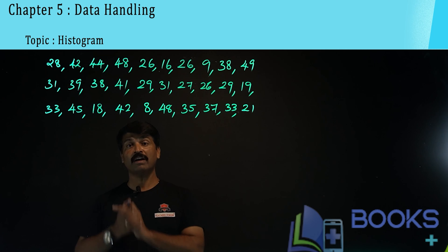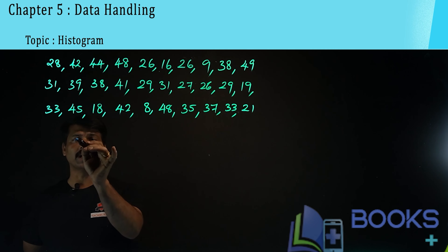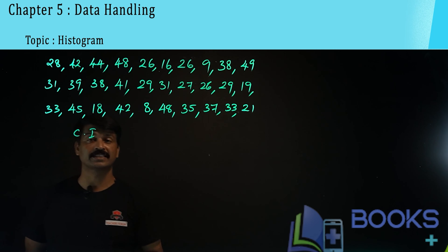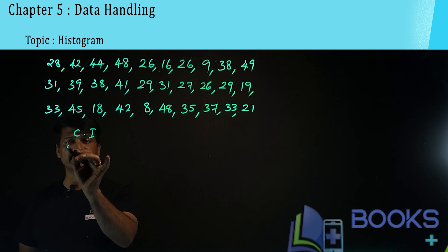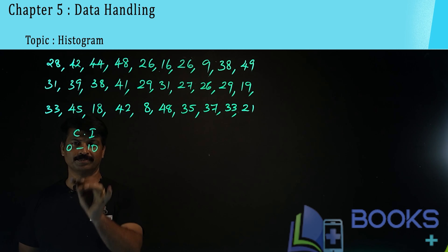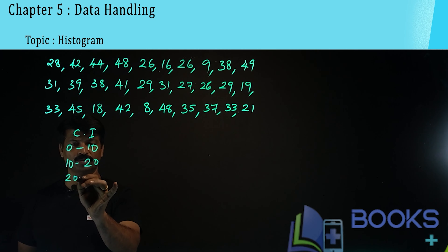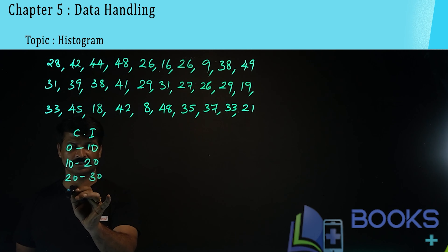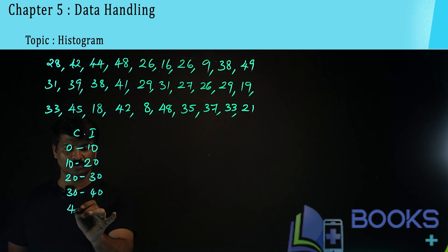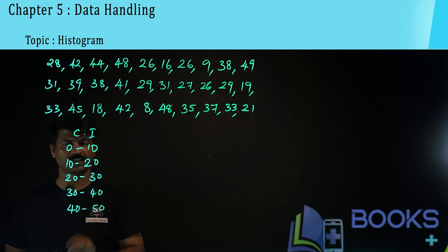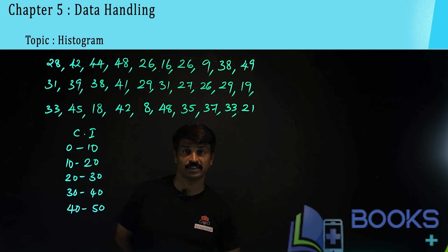We have to make some class intervals to include all these marks. The class intervals are: 0 to 10, then 10 to 20, 20 to 30, 30 to 40, and 40 to 50. The maximum mark is 50 out of 50, so the class interval is written 0 to 10, 10 to 20, and so on.